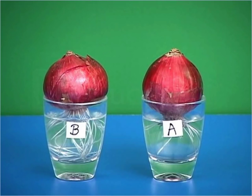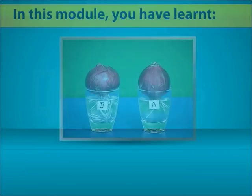From the above activity, it can be concluded that the root tip of the onion has a specific type of tissue called meristematic tissue which causes the growth of a plant.